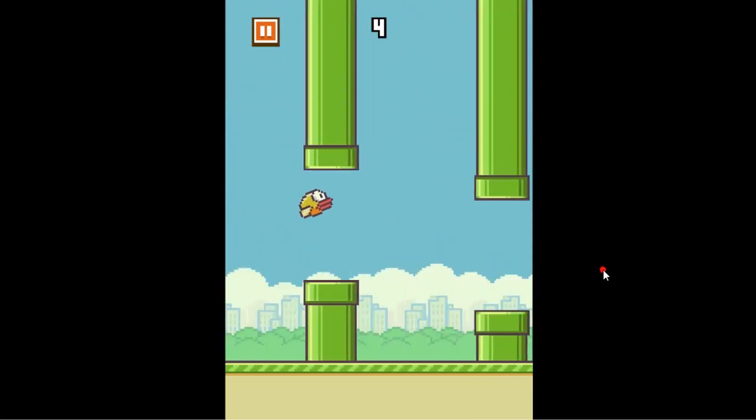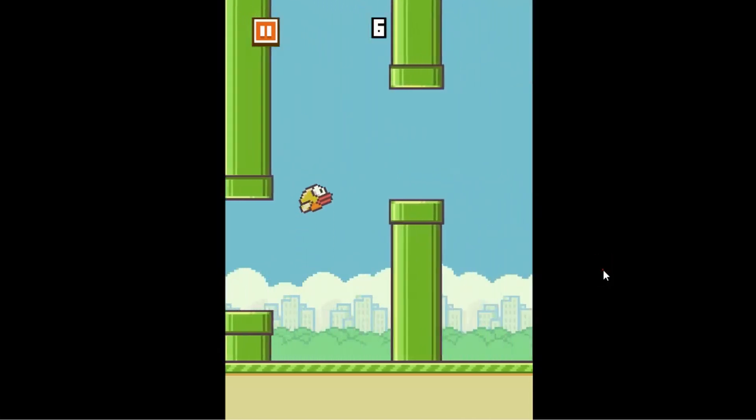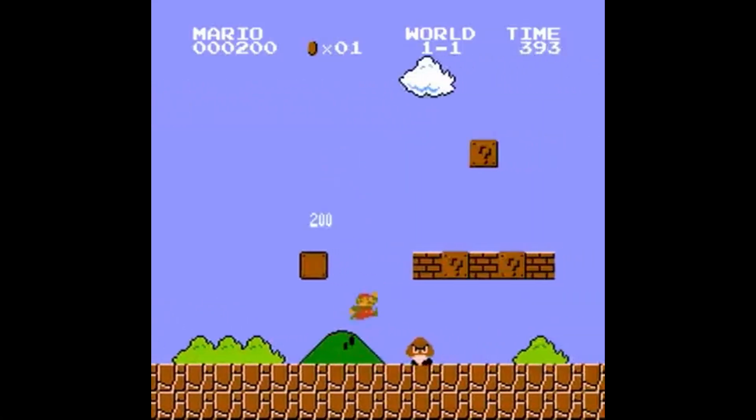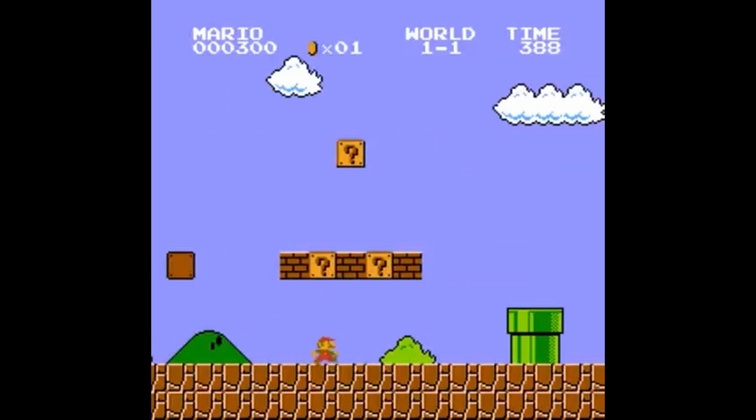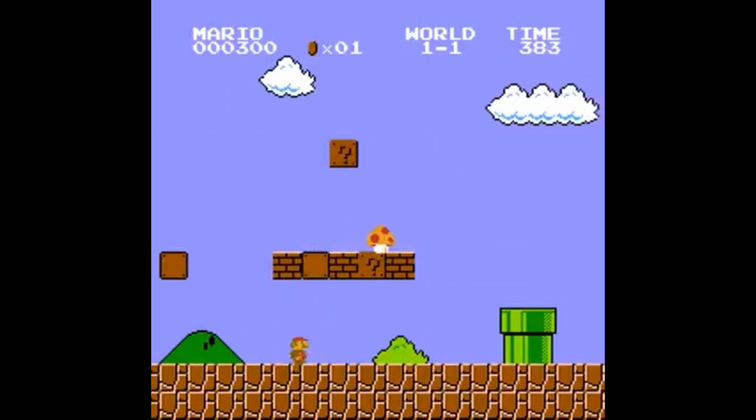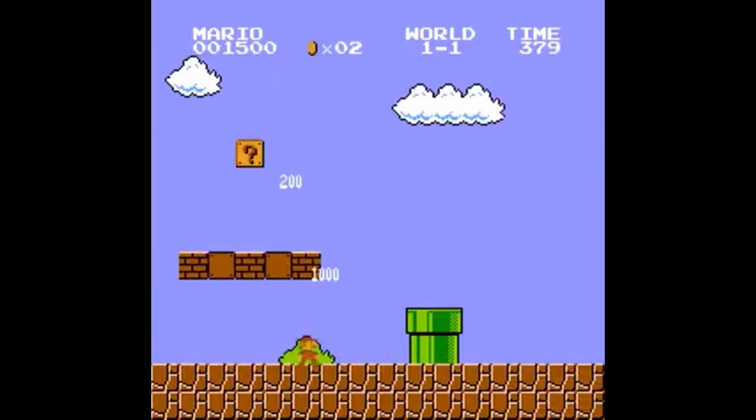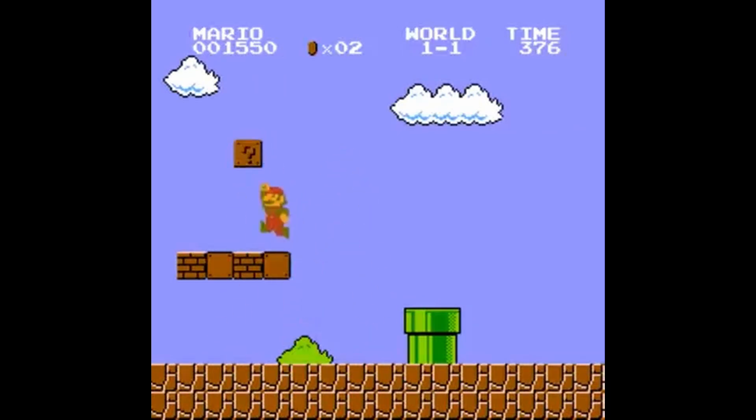Just imagine you're making a simple 2D game like a platformer. Your player, character, platforms, and enemies can all be Node 2Ds. Each of them can be moved around, rotated, and resized, just like you can move, rotate, and resize objects on a piece of paper.